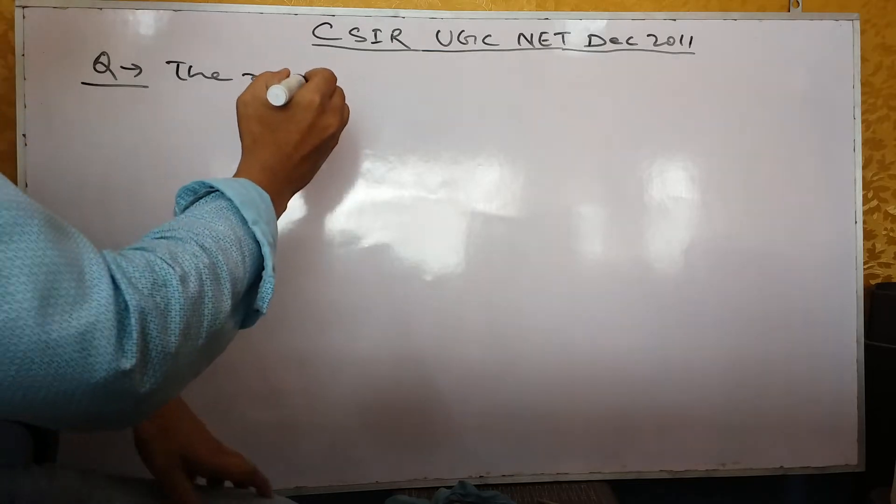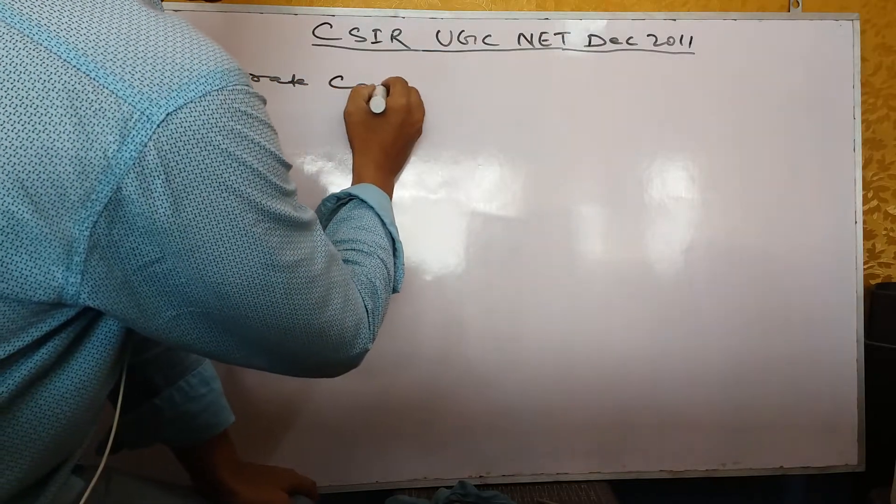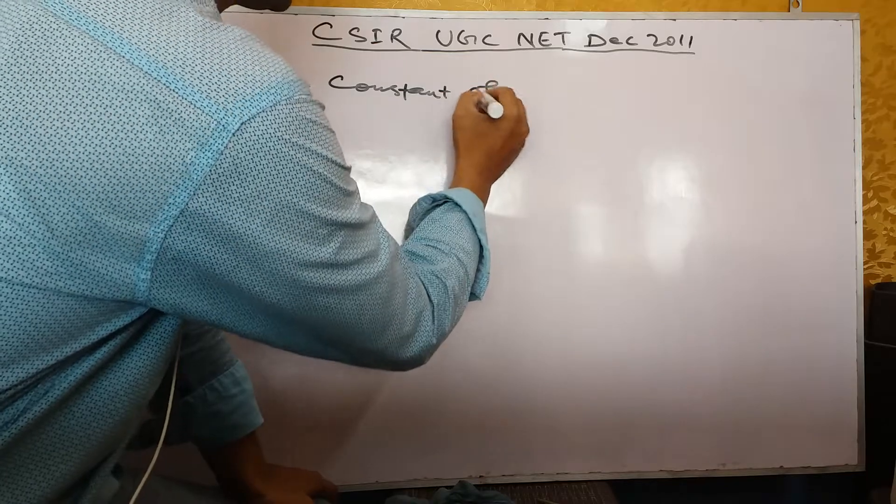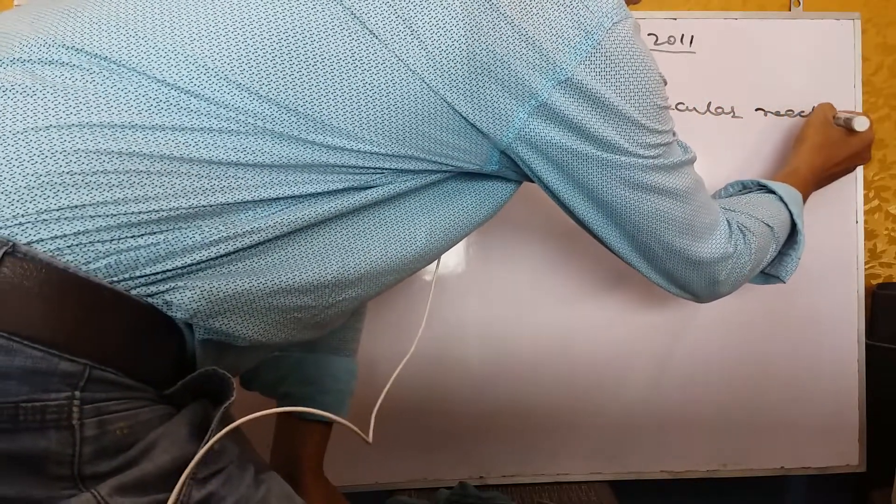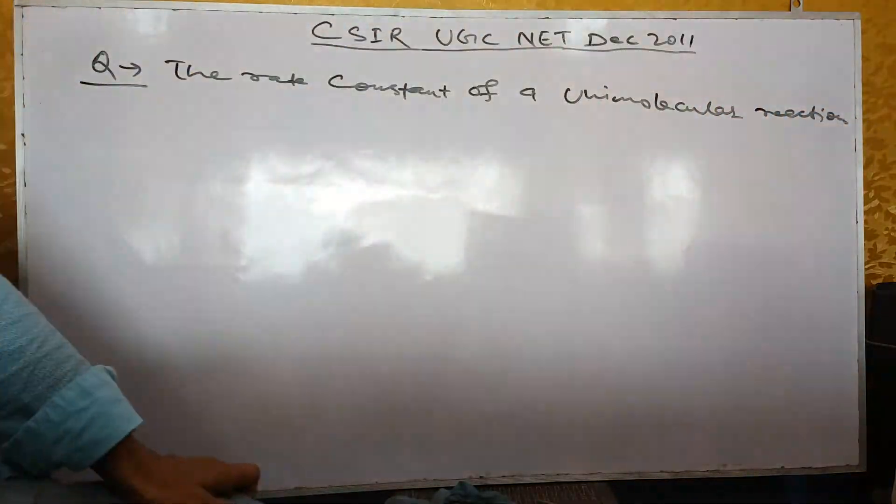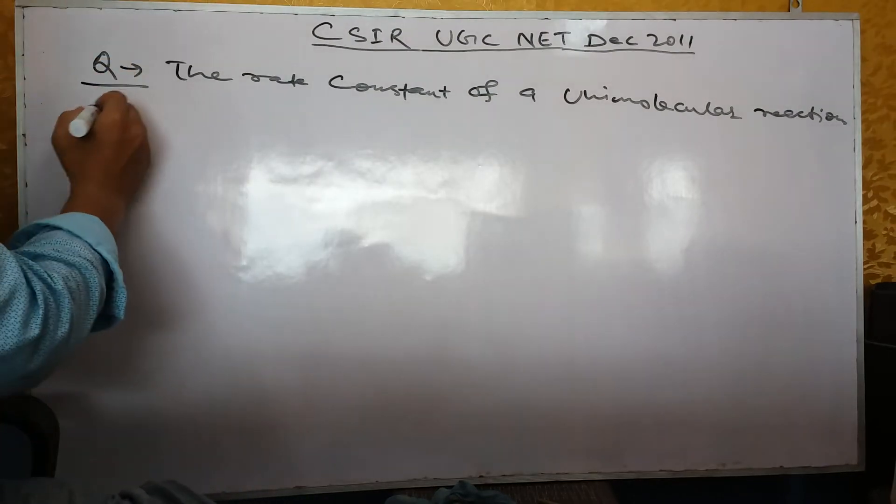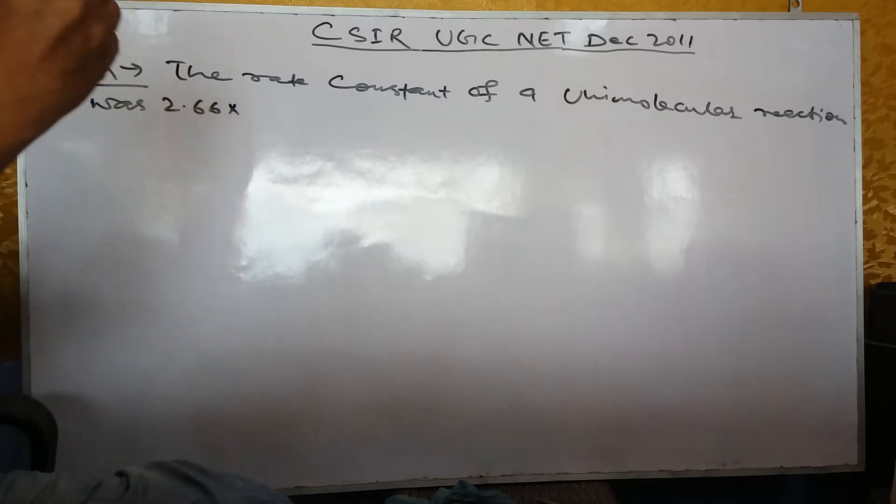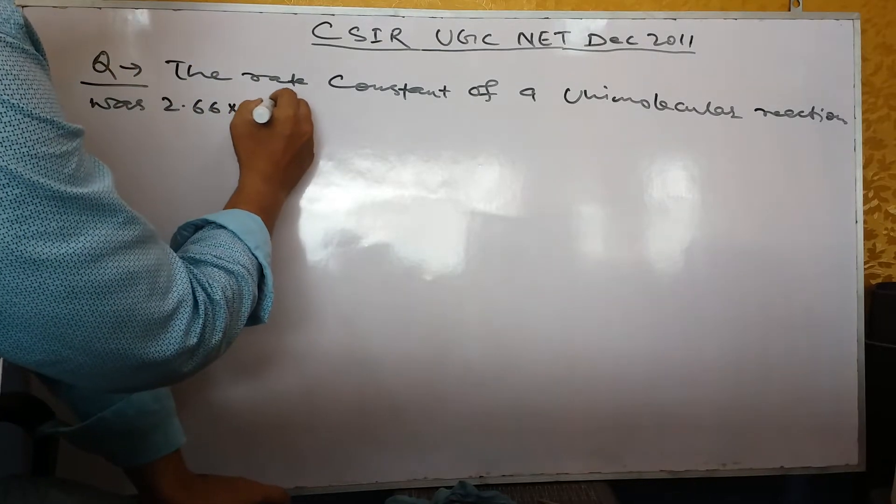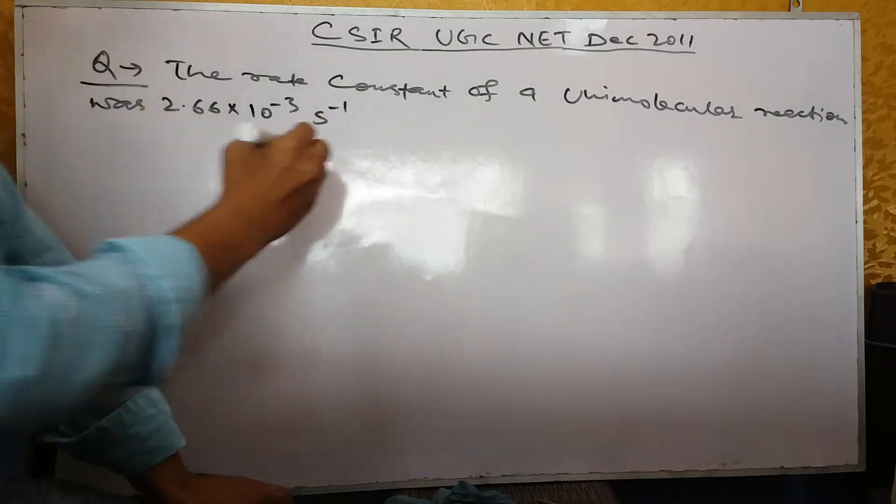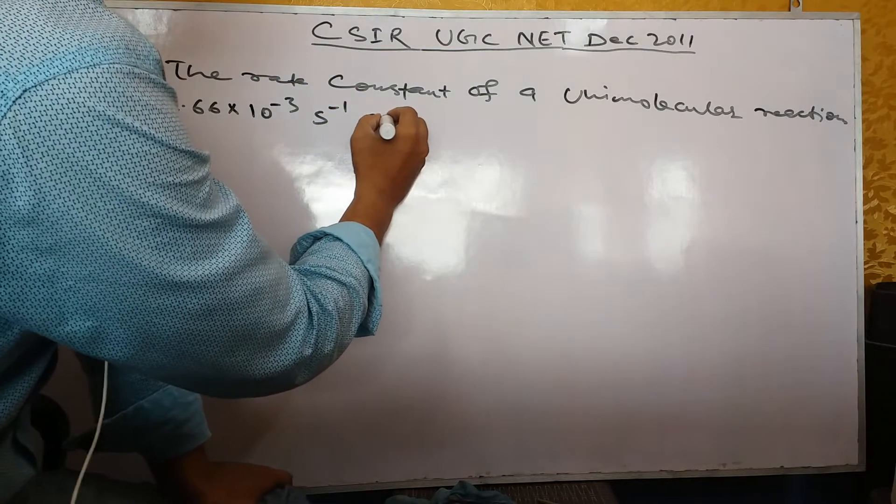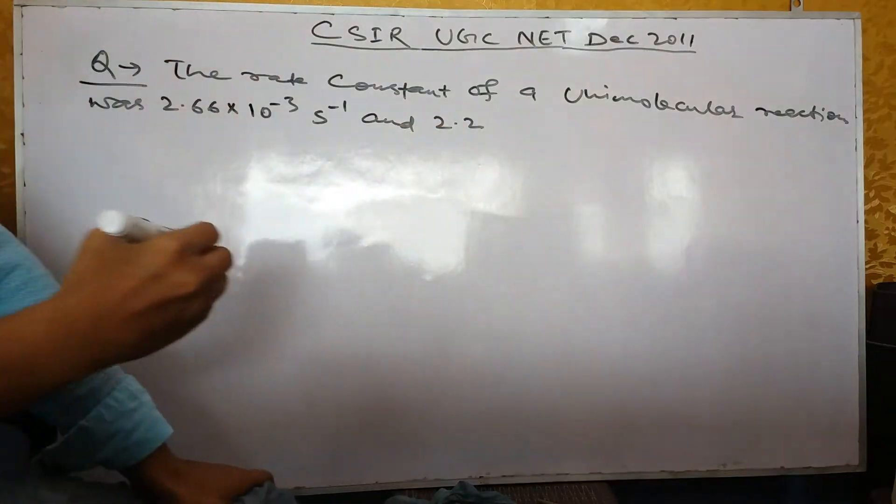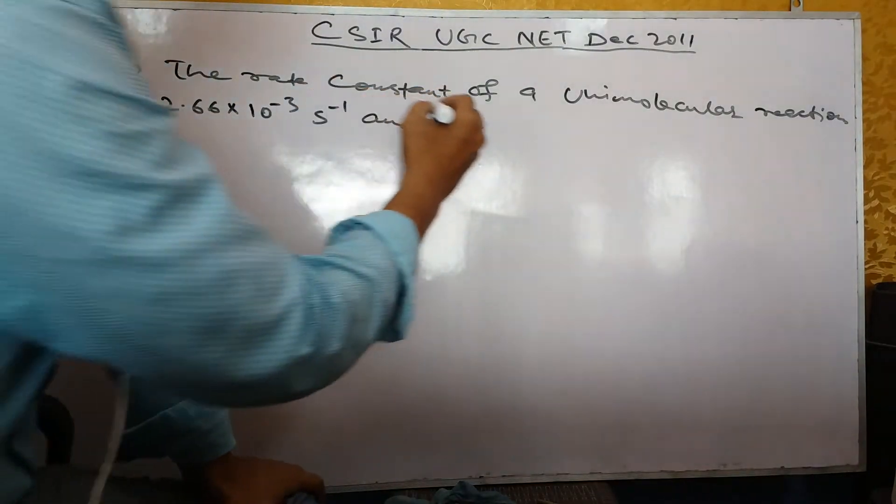The rate constant of a unimolecular reaction was 2.66 × 10^-3 per second and 2.2 × 10^-1 per second.